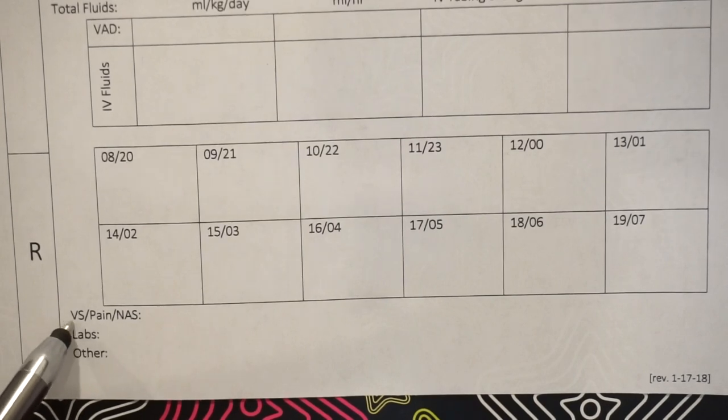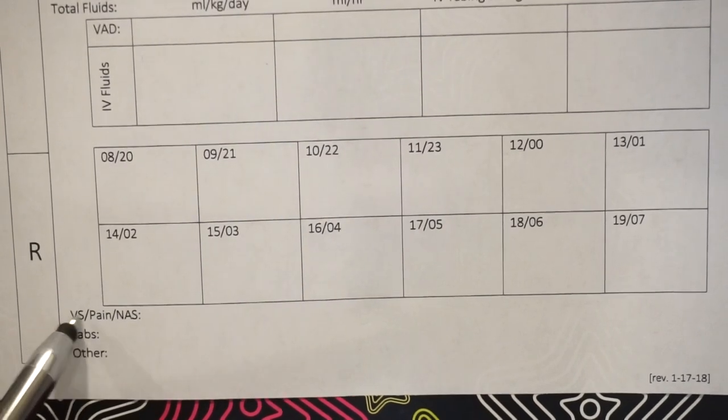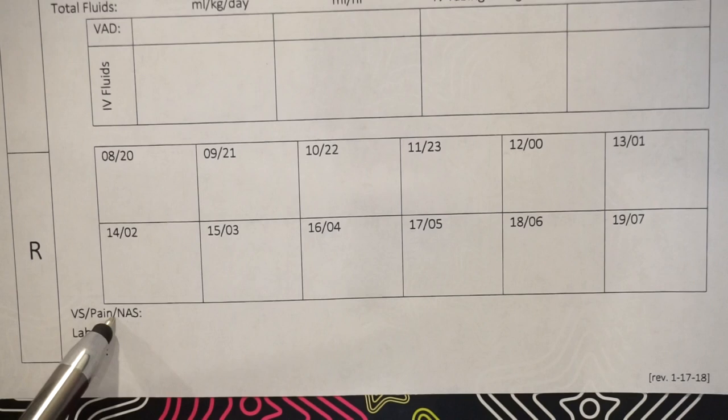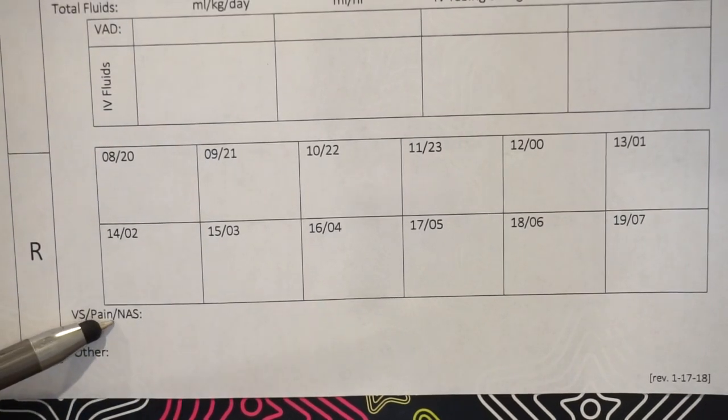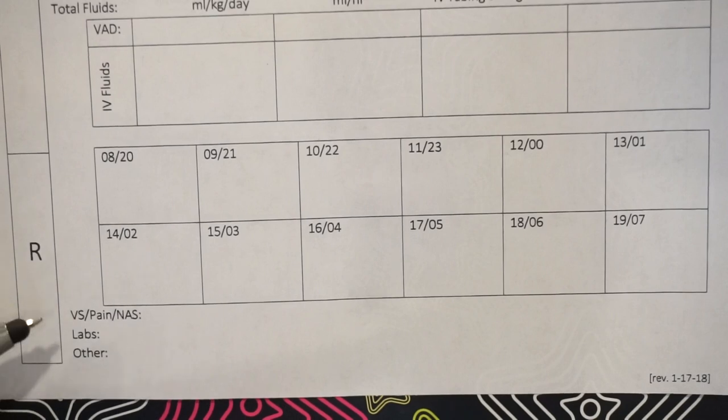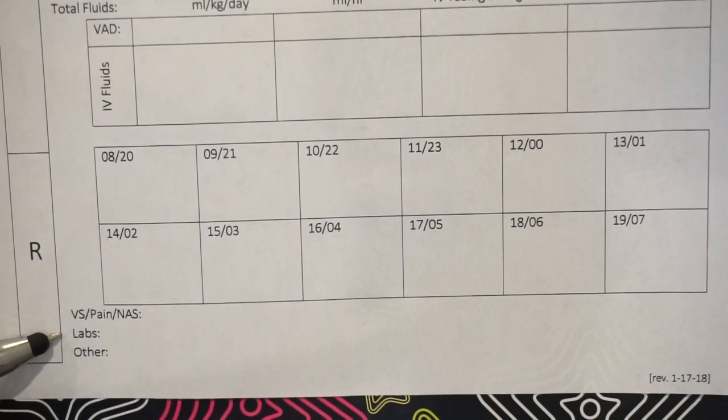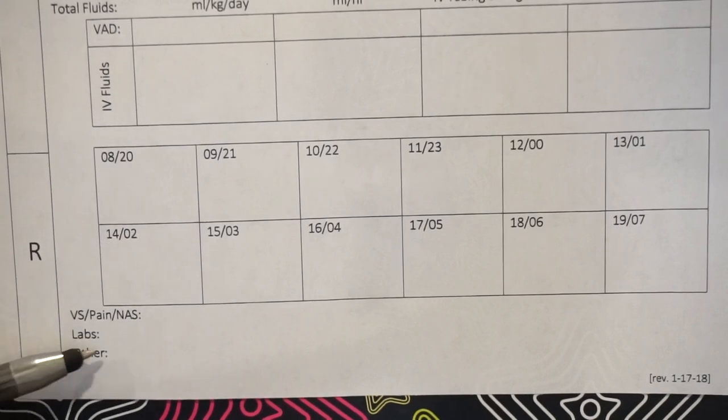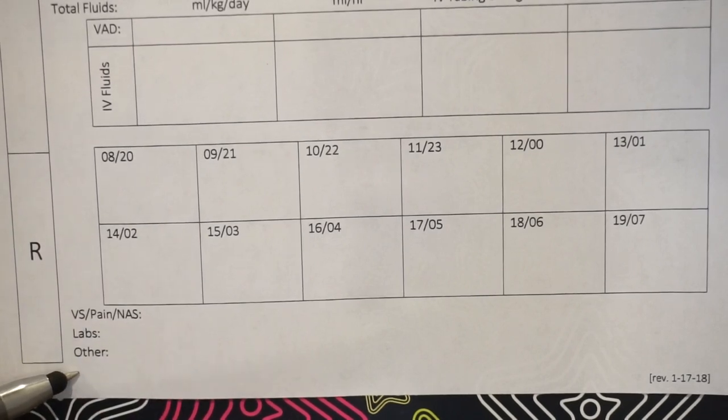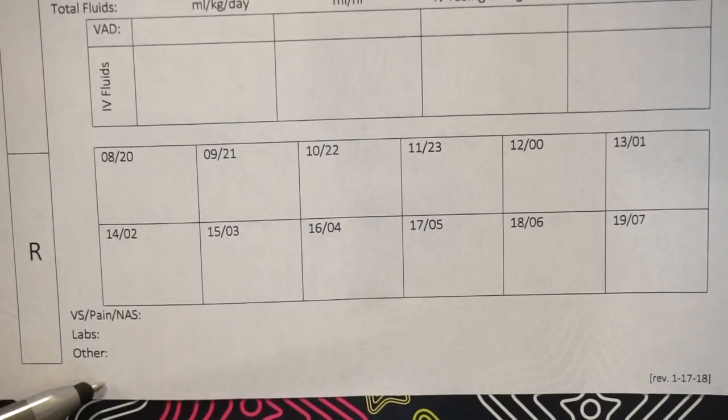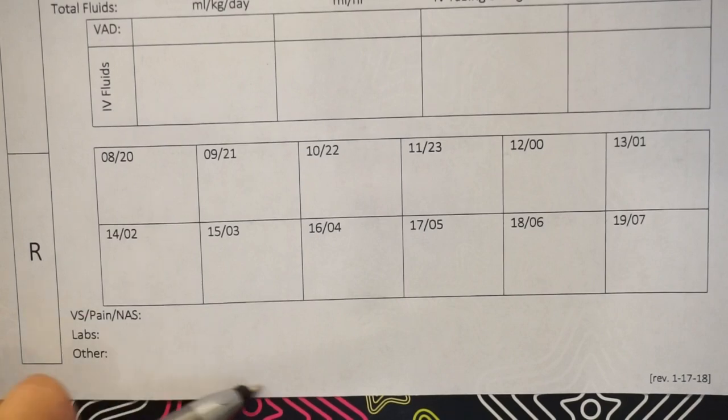So down here, we can write if their vital signs are Q-shift, which is more so for the babies that are going home soon. And we have NAS, so you would put their neonatal abstinence score there. Labs, so if I'm working night shift and I have a patient with labs due, I will write it down here just to remind myself. And then other would be things like just different reminders that you need to put down. Like, let's say they need a car seat test during your shift, you would just write down any other information down here.